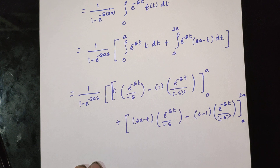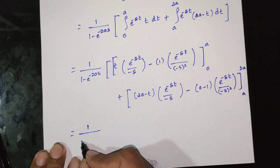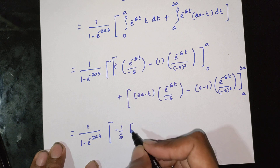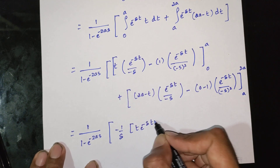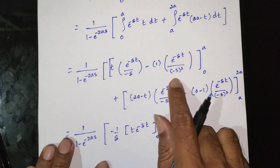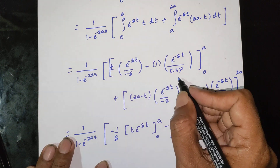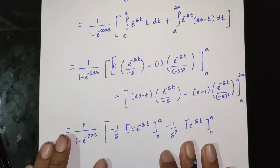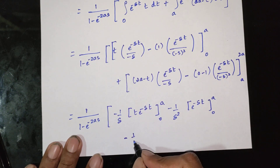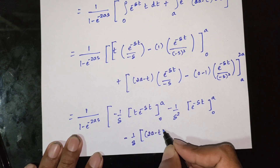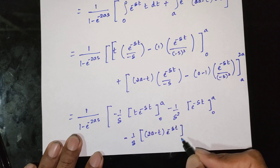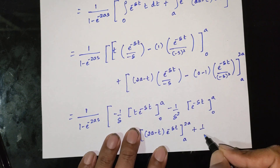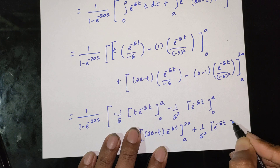After applying the UV rule, we evaluate with limits. The expression becomes 1 by (1 minus e power minus 2as), times: minus 1 by s times [t times e power minus st] from 0 to a, minus 1 by s squared times [e power minus st] from 0 to a, plus minus 1 by s times [(2a minus t) times e power minus st] from a to 2a, plus 1 by s squared times [e power minus st] from a to 2a.